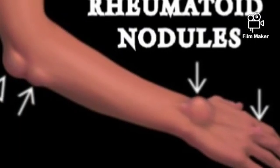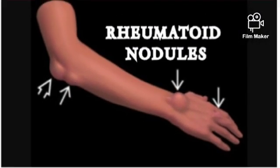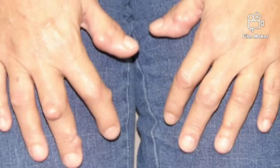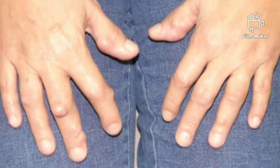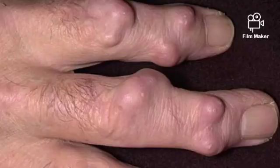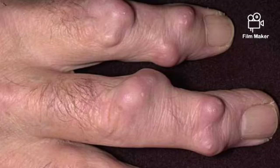Rheumatoid nodules: these are lumps formed under the skin near the joints, most commonly in the fingers. They may also be seen in multiple areas, including the elbows. This condition may not be painful, but due to its nature, patients often feel uncomfortable with their hands looking that way.